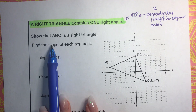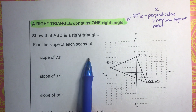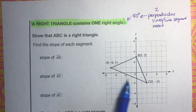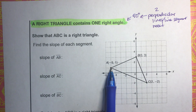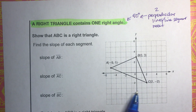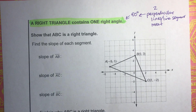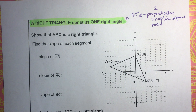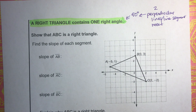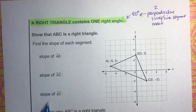We want to show that triangle ABC is a right triangle. To do that, we need to find two of these line segments — AB, BC, and AC — and show that two of those are perpendicular. That means their slopes, when multiplied together, give negative one: opposite signs, one positive and one negative, and they must be reciprocals. So we'll look at the slopes of all three line segments.